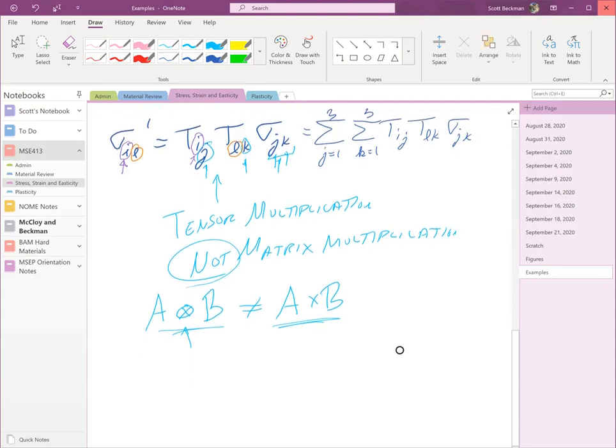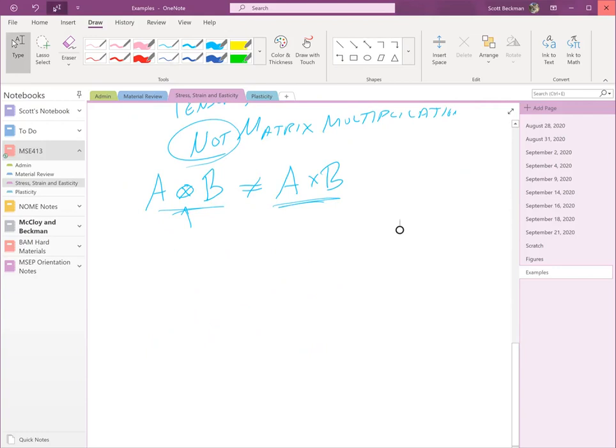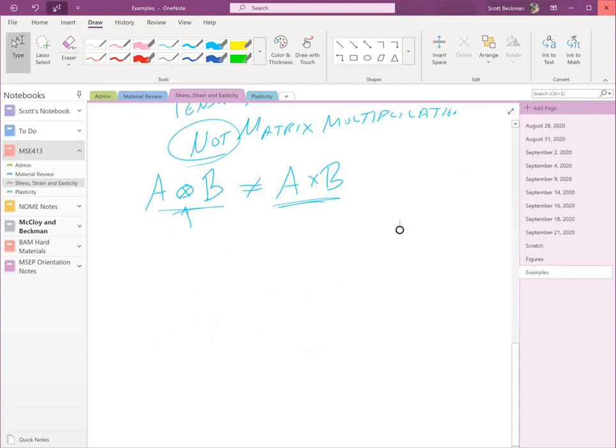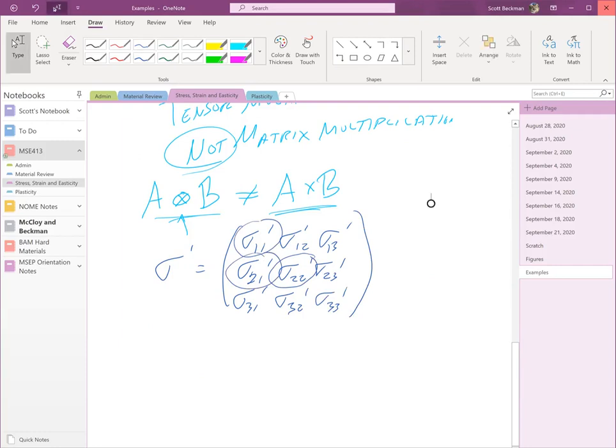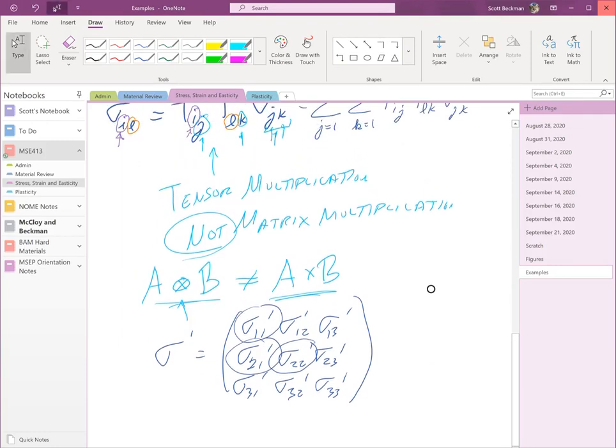So in practical terms, that means that where we have our sigma prime is equal to sigma 1 1 prime, sigma 1 2, sigma 1 3, sigma 2 1 prime, sigma 2 2 prime, sigma 2 3 prime, sigma 3 1 prime, sigma 3 2 prime, sigma 3 3 prime, each one of these terms is going to require a double sum.